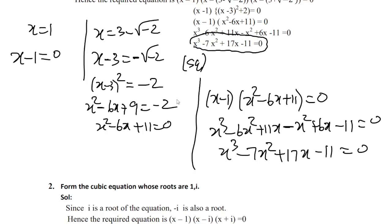If you go this way, it will be answered. Now, x minus 1 equals 0. If you expand and remove the root of the recursion, the final result will be a cubic equation. Practice.